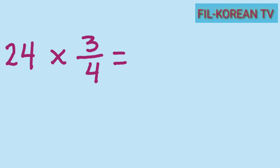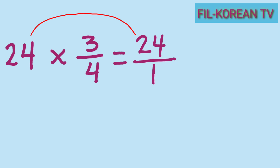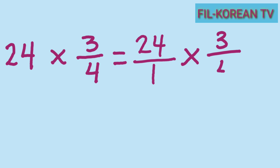The first thing we will do is convert the whole number into an improper fraction using 1 as the denominator, so 24 becomes 24 over 1. Then we write the multiplier 3/4. For the next step, we can use the cancellation method before multiplying to reduce the numbers. We look at the numerator of the multiplicand and the denominator of the multiplier — 24 and 4 have common factors, so we will divide them by their GCF.